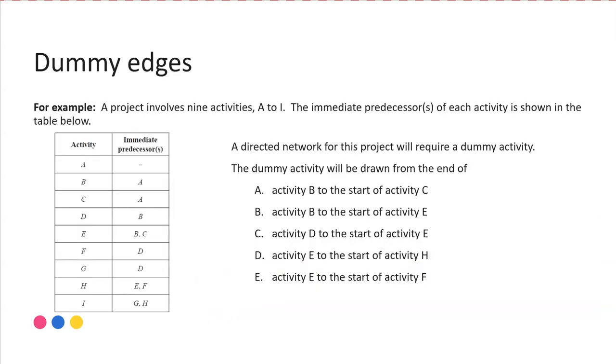Here's a quick example of how you might need to interpret that activity table, a precedence table, and how you can identify where the dummy should be. So we have here an example. A project involves nine activities, A to I. The immediate predecessors of each activity is shown in the table below. A directed network for this project will require a dummy edge. So even if I didn't know that, I'll show you how I can identify it from the table. And we're being asked to say, where is the dummy activity needed? Where should it be drawn?